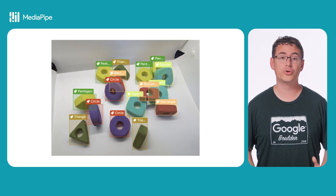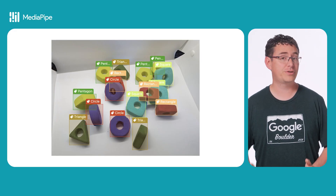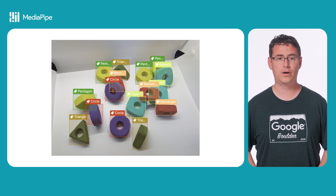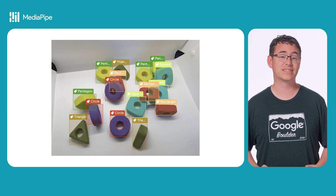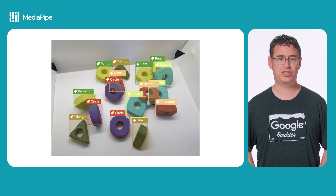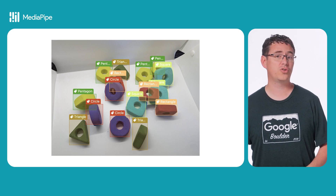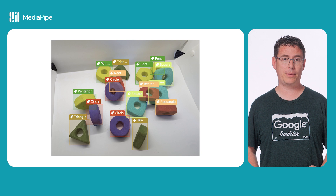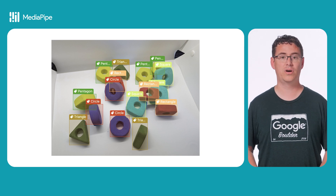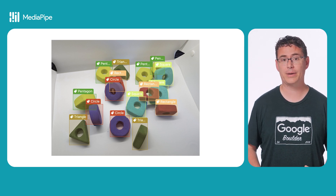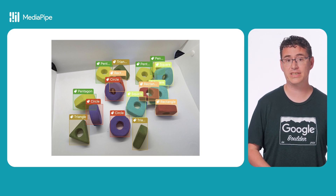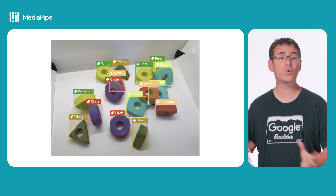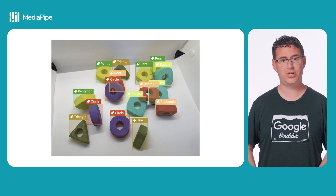Some of these edge cases include overlapping objects, different rotations and sizes for objects compared to the training data, or only partial objects existing within an image. We'll take a more detailed look into this process when training a new model with MediaPipe Model Maker in the next video. Here you can see a simple example of those edge cases with an annotated image of blocks for a children's toy that I recently built for this video series.